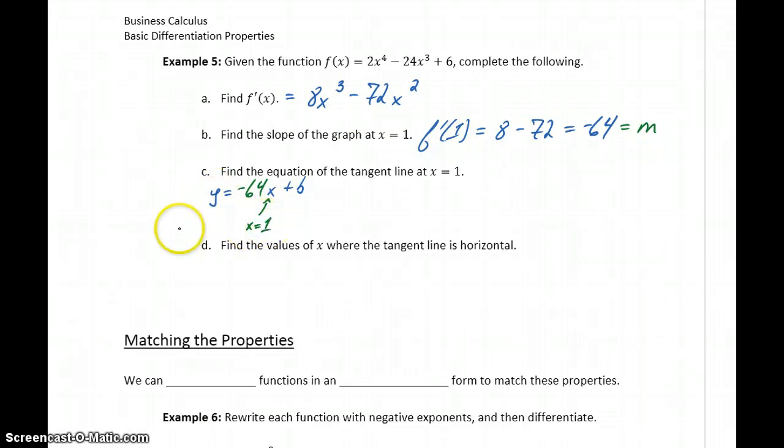So our value for x should be x equals 1, which means our y value will be the original function evaluated at 1, which in this case is negative 16. So we would come back to the original function and evaluate f of 1 to get that negative 16. So this means we'll get negative 16 equals negative 64 times 1 plus that value for b that we're still trying to find.